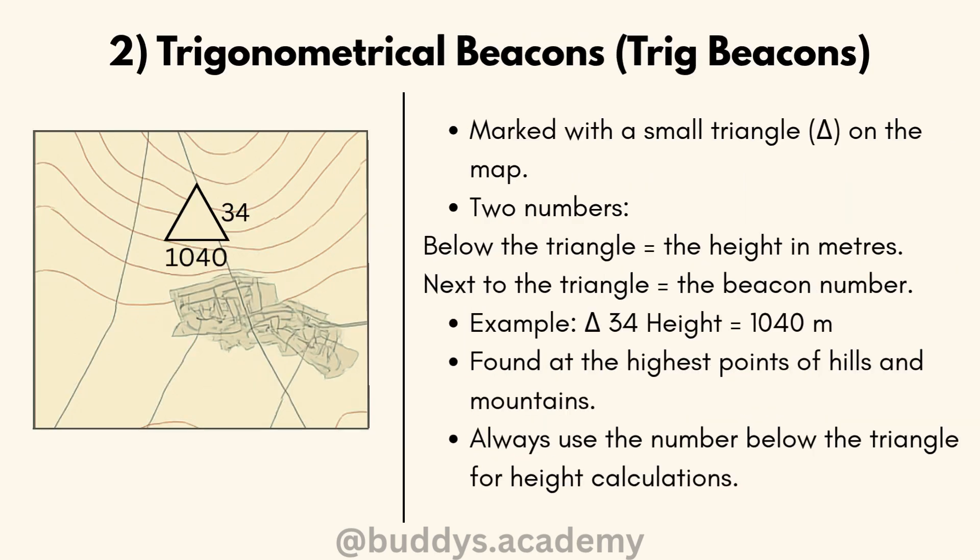Next we have your trigonometrical beacons, also known as trig beacons. A trig beacon is marked with a small triangle, and there's a number below the triangle and a number next to the triangle. The number below the triangle is the actual height you're looking for, and the number next to the triangle is just the number of the beacon. In our example, the height below the triangle is 1040 meters, and the number next to the triangle is 34, which is just the beacon number.